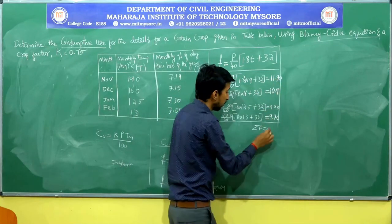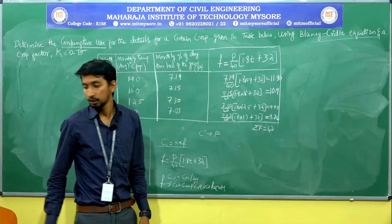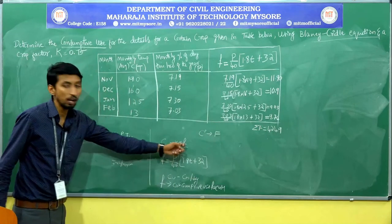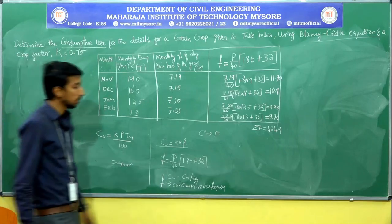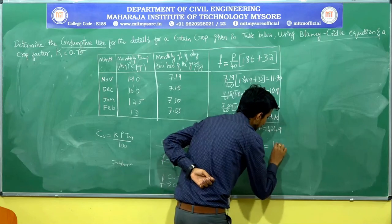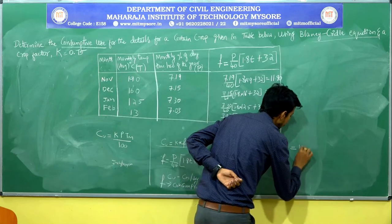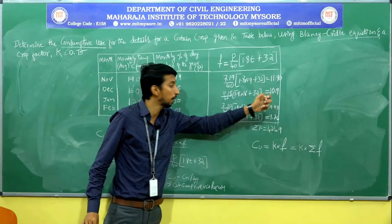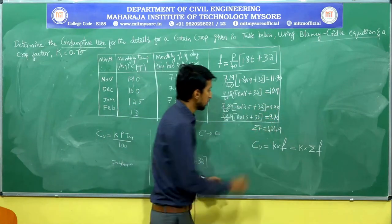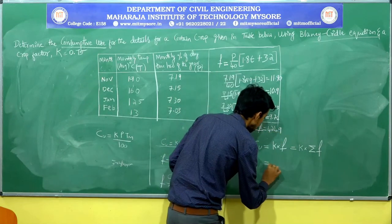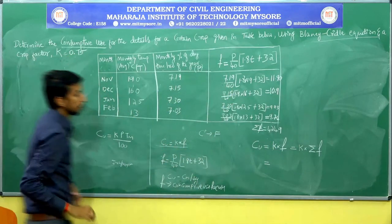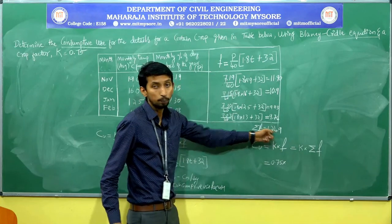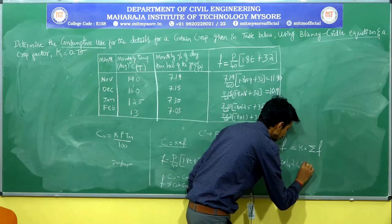The summation of all the consumptive use factors for the four months — November, December, January, and February — gives ΣF = 42.49. Now, knowing K = 0.75 and ΣF = 42.49, we can find CU. CU = K × ΣF = 0.75 × 42.49.